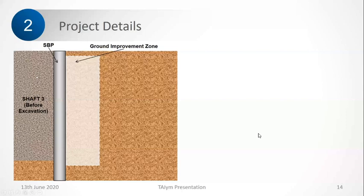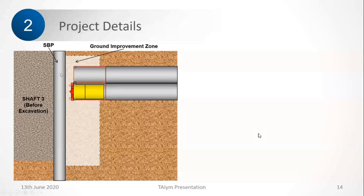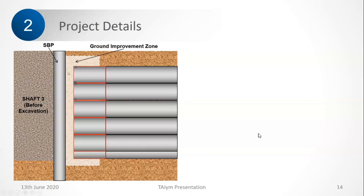The shaft was not yet completed — this is the retaining structure. When the pipes arrived, they stopped in a ground improvement zone so there was no water ingress. The cutter had collapsed and was retrieved back. The ground improvement was sufficient to prevent any water ingress. Then all the pipes were jacked.